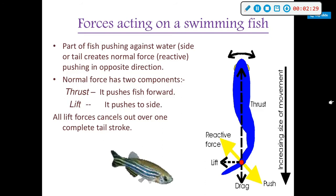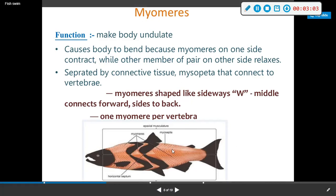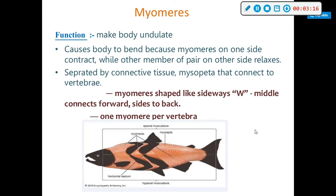Myomeres make the body undulate — they cause the body to bend — because myomeres on one side contract while the paired myomeres on the other side relax. They are separated by connective tissue called myosepta that connect vertebrae. So myomeres are the wavy things and myosepta are the white lines. Contraction occurs in a wave down one side of the body while the other side relaxes.